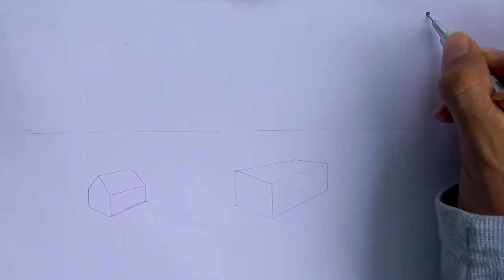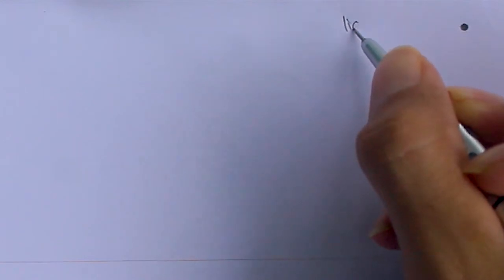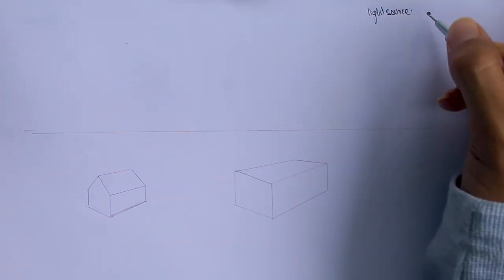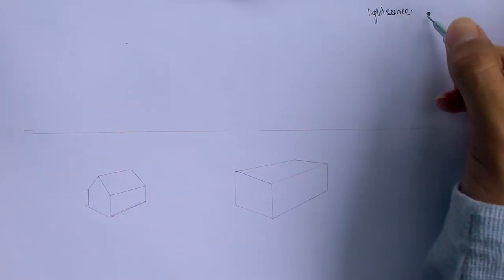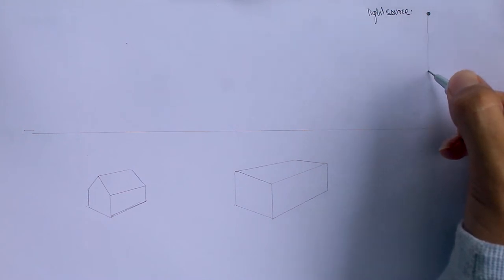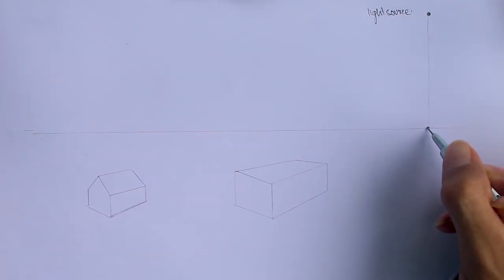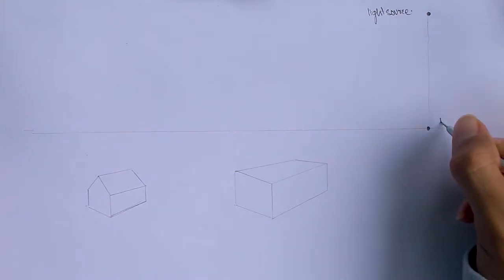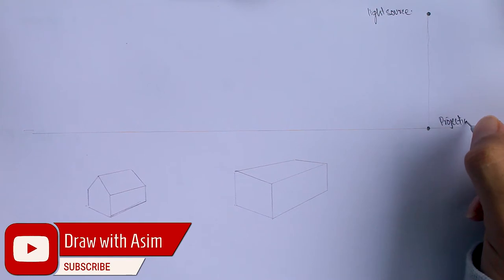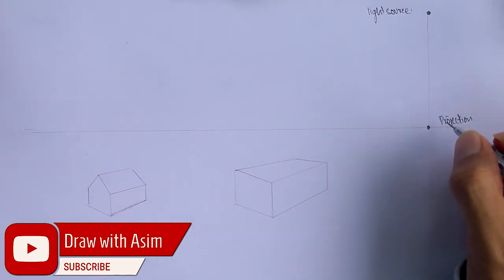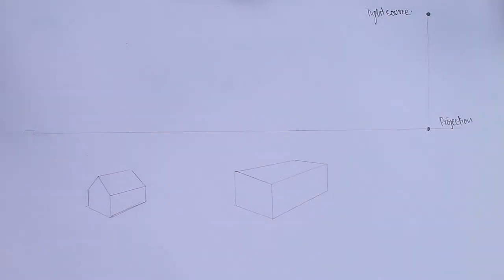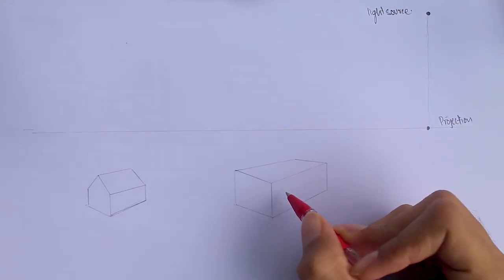Whenever you are giving shadows, you have to observe the light source — from where the light is striking the object — and mark the point where the light source is coming from. Once you have marked the light source, draw a vertical perpendicular line from the light source down to the reference line. This will be considered the projection of the light source onto the ground surface, and we mark that projection point on the reference line.